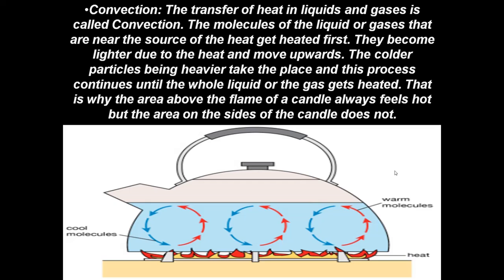The other way of transfer of heat is convection. The transfer of heat in liquids and gases is called convection, where the molecules of the liquid or gas near the heat source get heated first. They become lighter and move upwards, while the colder, heavier particles take their place, and this process continues until the whole liquid or gas gets heated. That is why the area above the flame of a candle always feels hot, but the area on the sides does not. If you carefully observe when preparing tea or boiling something, you can observe this convection easily.